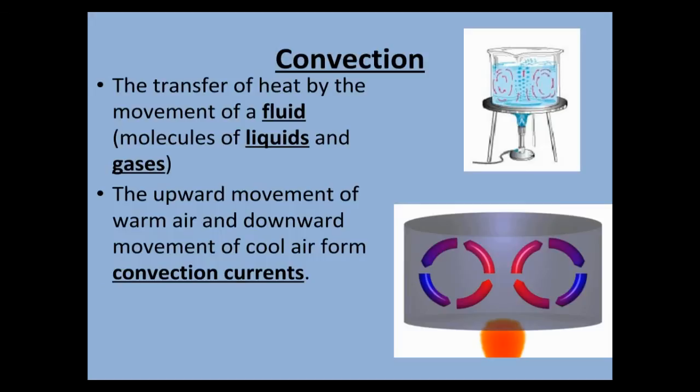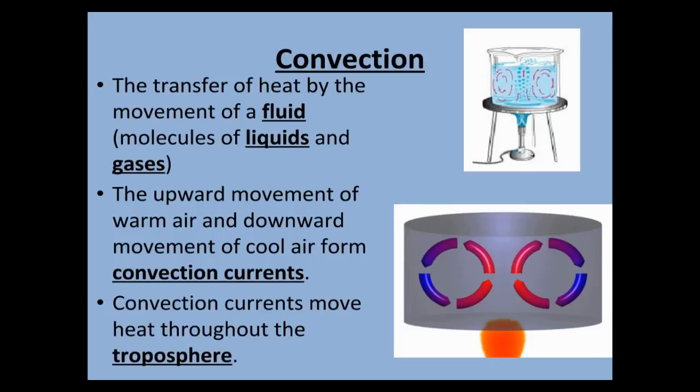Convection is also the upward movement of warm air and downward movement of cool air. This is what forms convection currents. This is how our wind occurs. Cool air in the atmosphere sinks, takes the place of the warm air in the atmosphere that rises. Convection currents are what moves heat through our troposphere. In the atmosphere, convection currents lead to thunderstorms and cause wind.